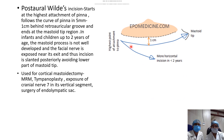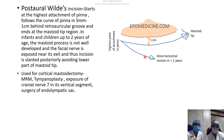The postaural (Wilde's) incision starts at the highest attachment of the pinna, lies about 5 mm to 1 cm posterior to the retroauricular groove, and extends to the mastoid tip. It is used in adults for cortical mastoidectomy, tympanoplasty, exposure of the facial nerve (cranial nerve VII), surgery of the endolymphatic sac, etc. In children, as the mastoid tip is not well developed, the facial nerve is superficially placed; to prevent damage, the Wilde's incision is placed more posteriorly and horizontally.